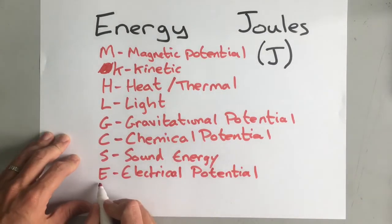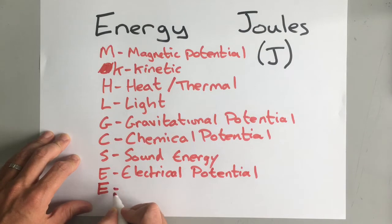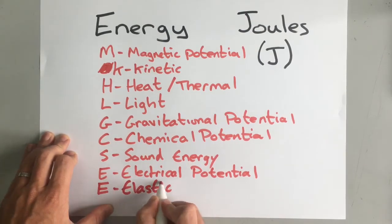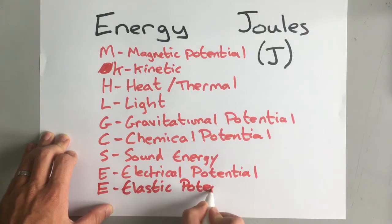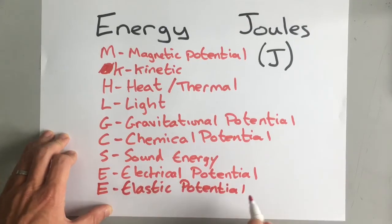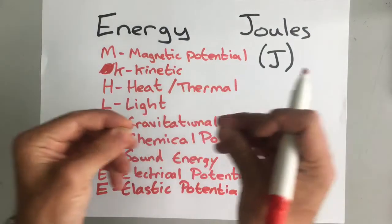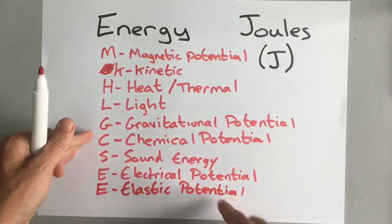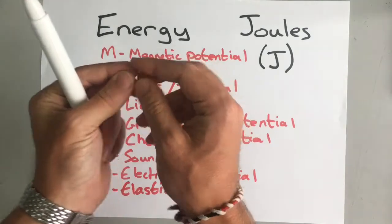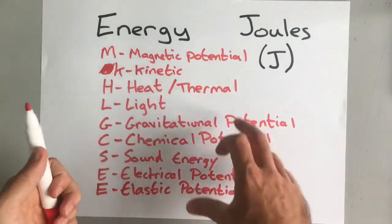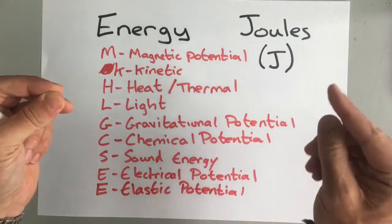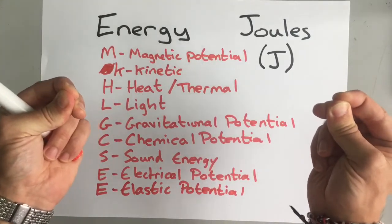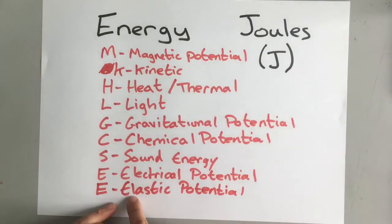So the next one is elastic potential. When you get an elastic band or a spring, you stretch it out and again it has the possibility, the potential to convert that energy into something else like kinetic. And when you let go, it does that. So elastic potential—it stores that energy as potential energy there.